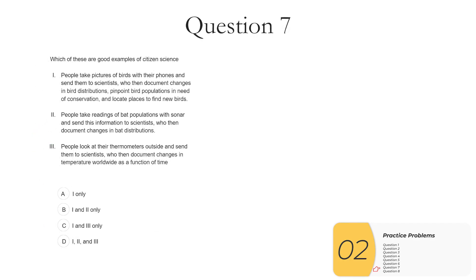Question seven, which of these are good examples of citizen science? We then document changes in bird distributions, pinpoint bird populations in need of conservation, and locate places to find new birds. This one is definitely true. This is a classic example of citizen science where we have cheap and low-skilled crowdsourced data from everywhere. This is actually a real example. This describes eBird, which is a real example of citizen science.